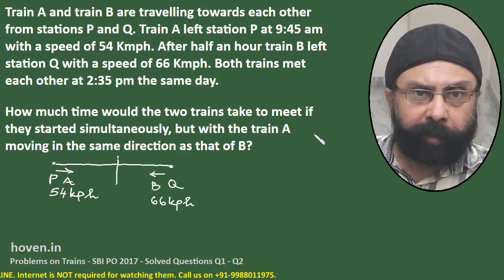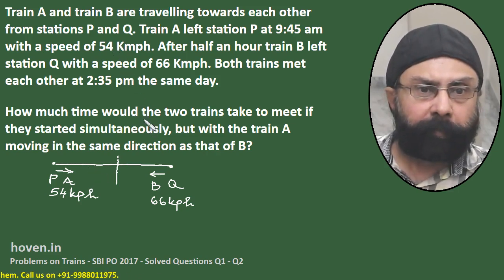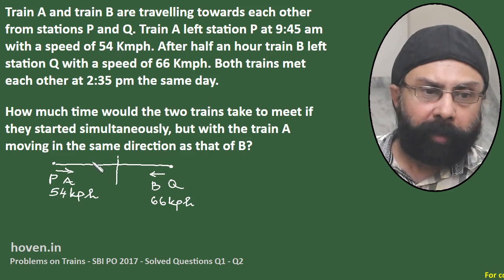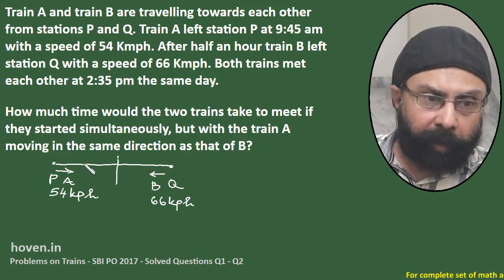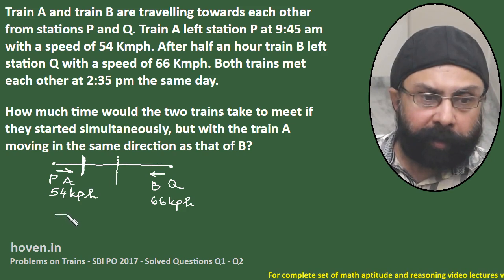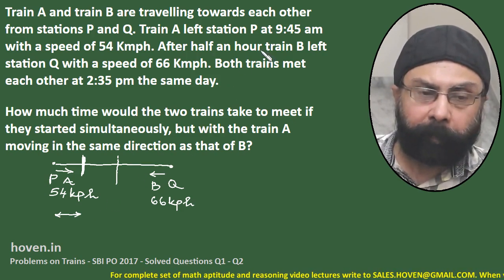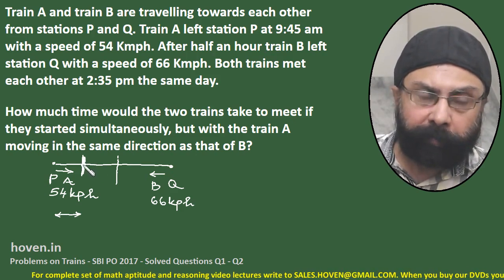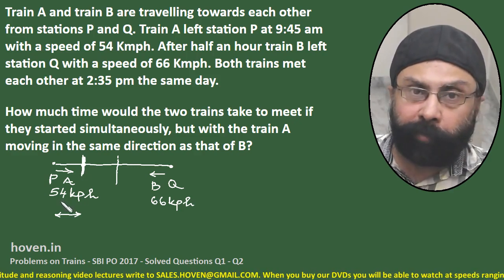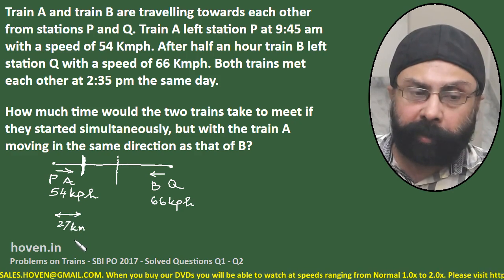Before moving on to the question itself, it is better to understand the statement clearly. Train B started half an hour later than A, so when train B started, A must have already travelled some distance. How much distance has A covered during that half hour? In one hour it covers 54 km, so in half an hour it covers 27 km.